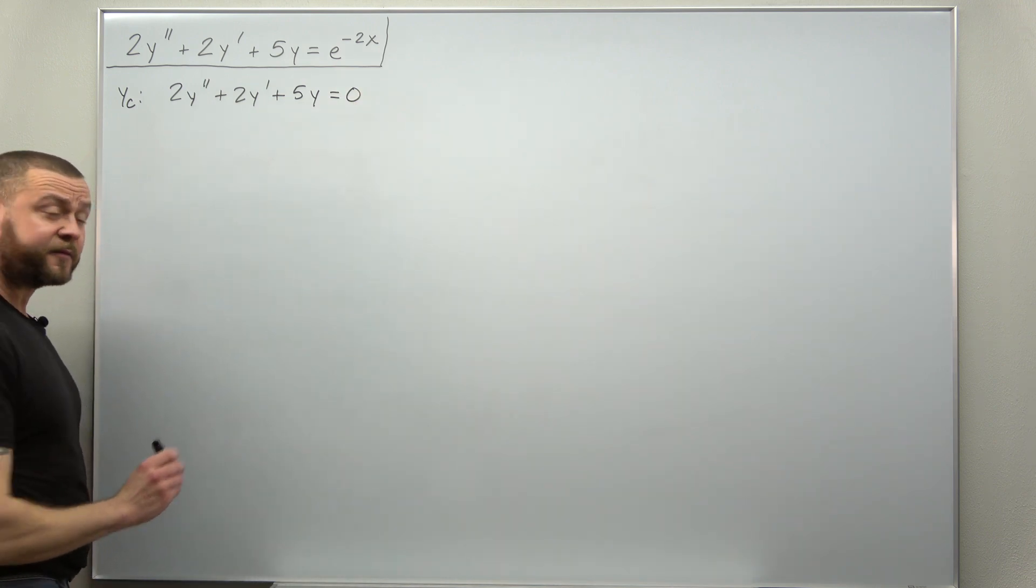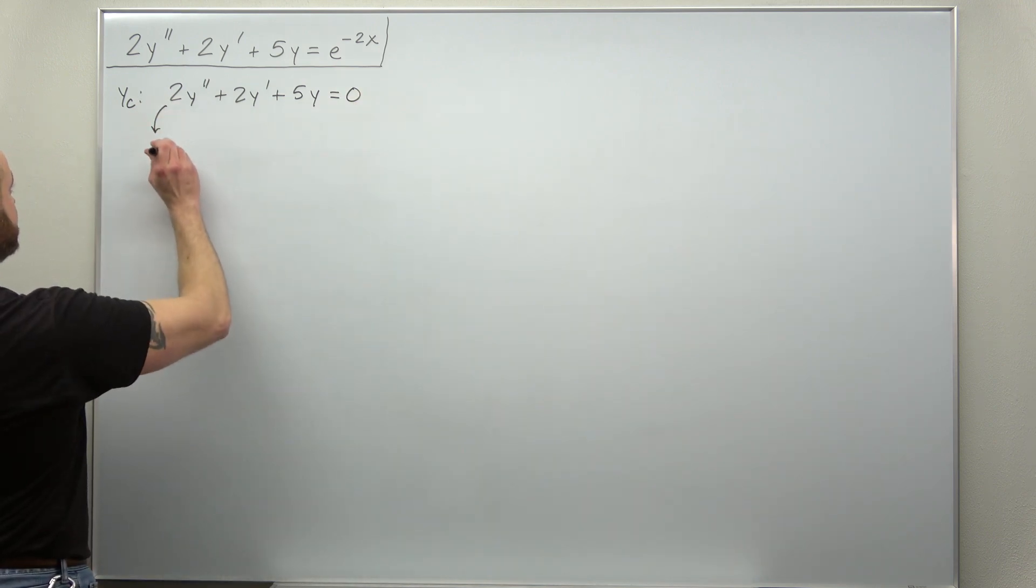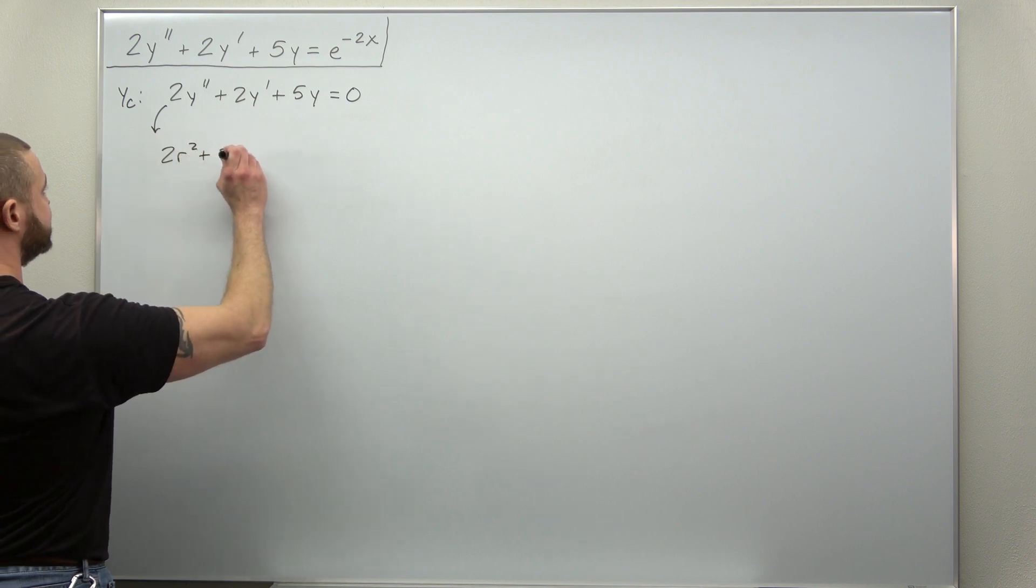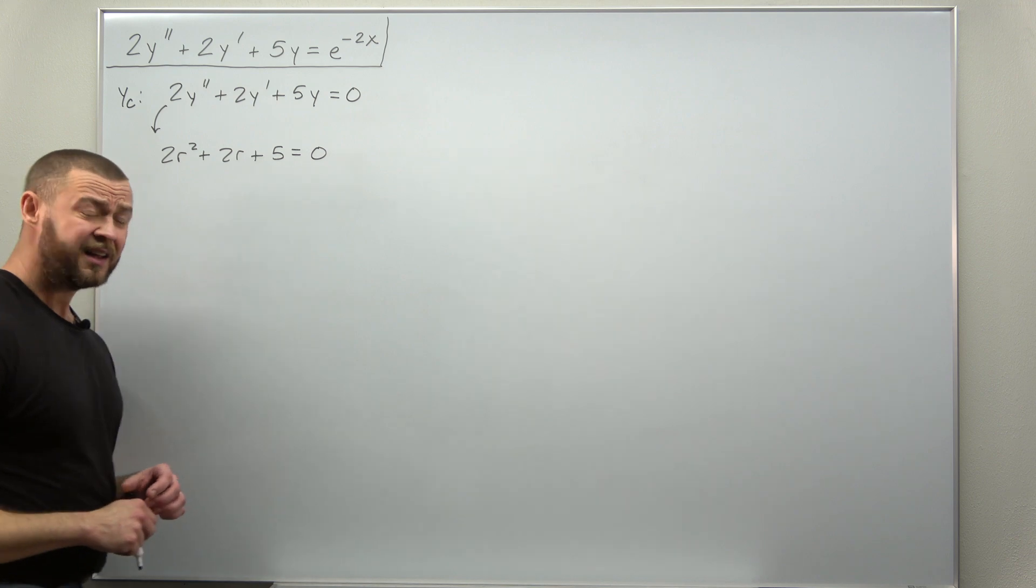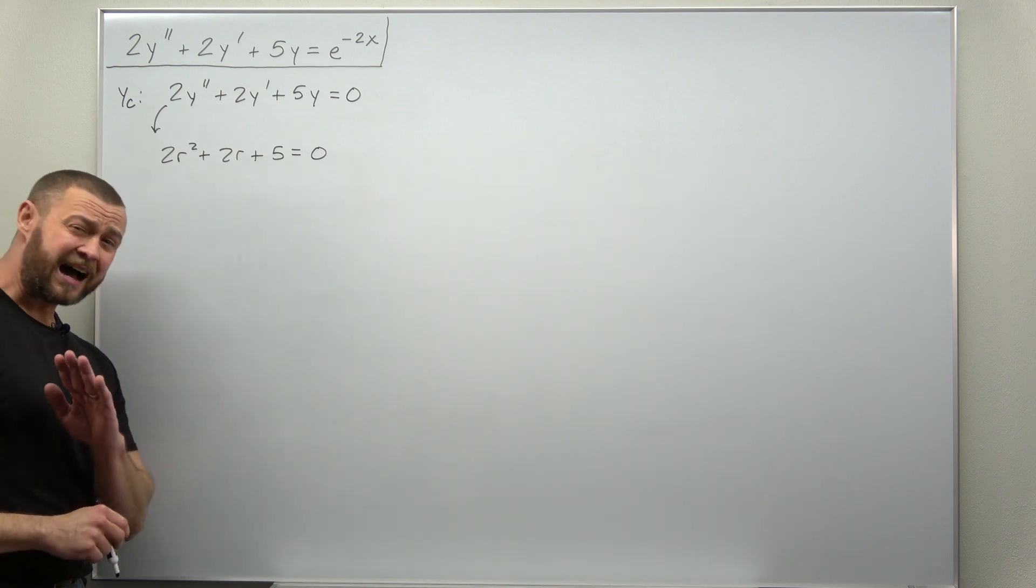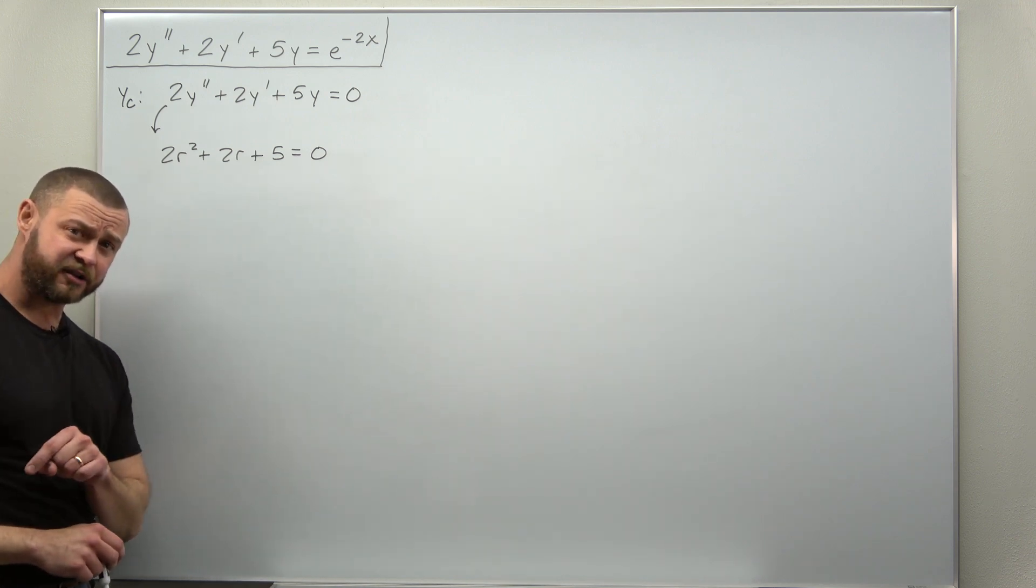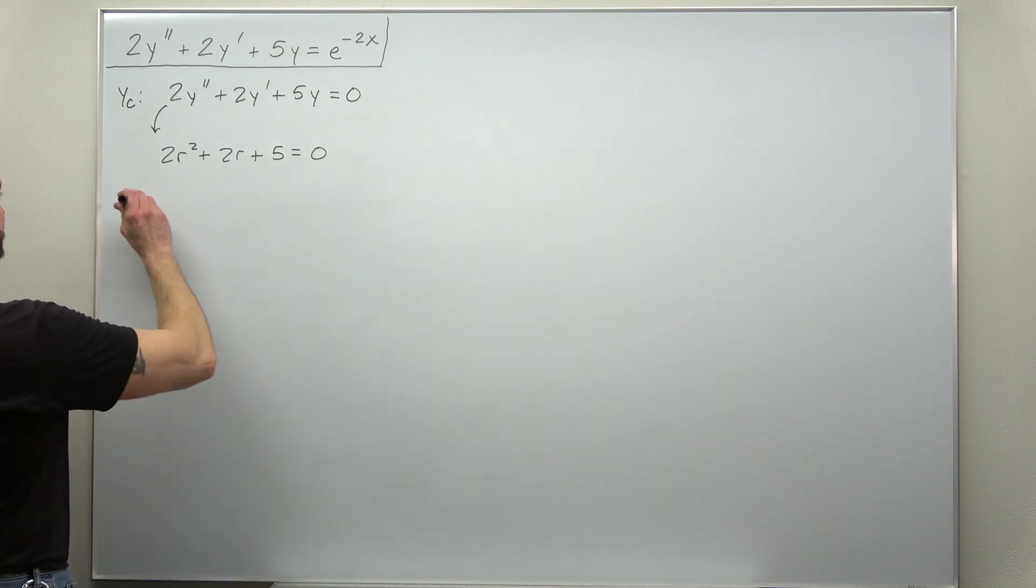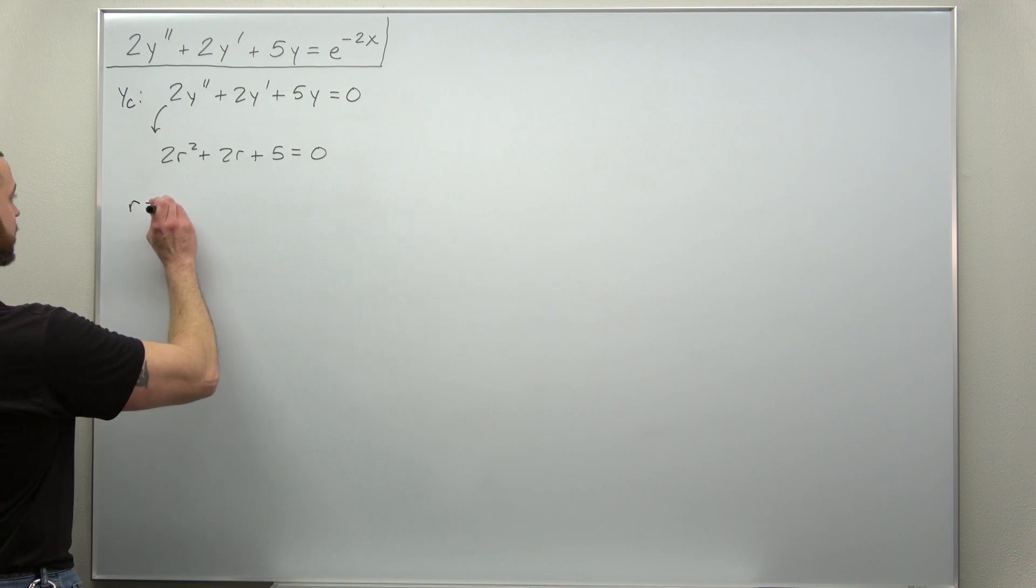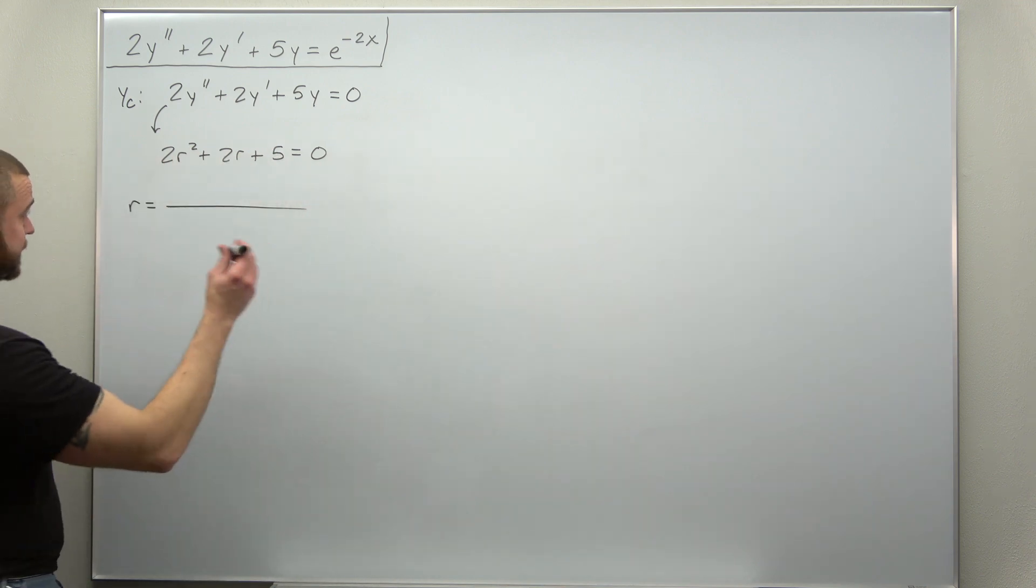We can quickly convert to the characteristic equation 2r squared plus 2r plus 5 equals zero. And I'm looking at that and I don't think that quickly factors. It might factor, but the quadratic formula is quicker. So let's go ahead and jump straight to that. I have my values of a, b, and c. I can plug them in.